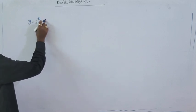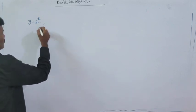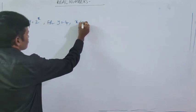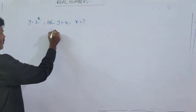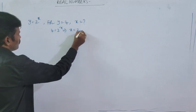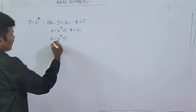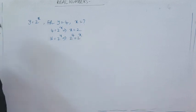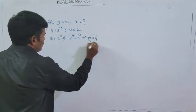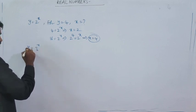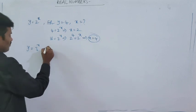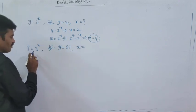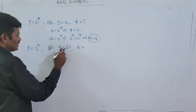How are x and y related? We can't say directly. For example, for y is equal to 4, can you guess the value of x? If 4 is equal to 4 to the power x, then x is 1. If 16 is equal to 4 to the power x, we can write 16 as 2 to the power 4, giving x equal to 4. For y is equal to 3 to the power x, if y is equal to 81, we can write 81 as 3 to the power 4, so x equals 4.